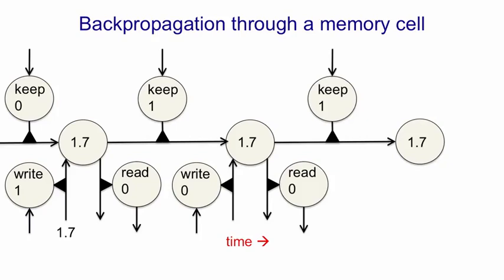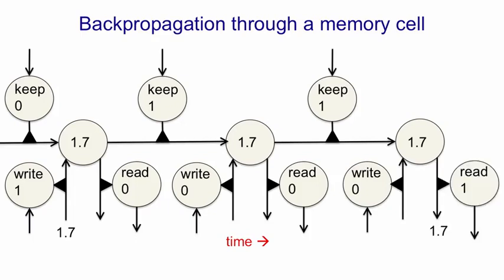Then we're going to set the write gate to 0, so no information is written in, but we're now going to retrieve the information by setting the read gate to 1. The value of 1.7 then comes out of the memory cell and goes off to influence the rest of the network. And if we don't need it anymore, the keep gate can be set to 0 and the information will be removed.